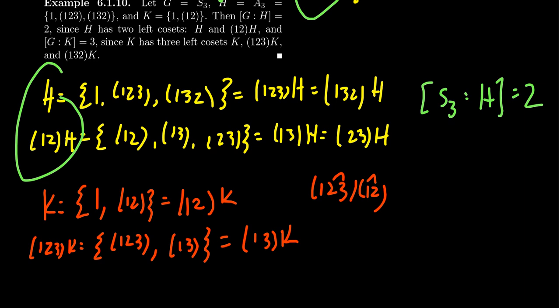And then the other one, if you take (1, 3, 2), this will contain, since it's a partition, I know what the other elements are going to be. You can take (1, 3, 2), and you're also going to have (2, 3).